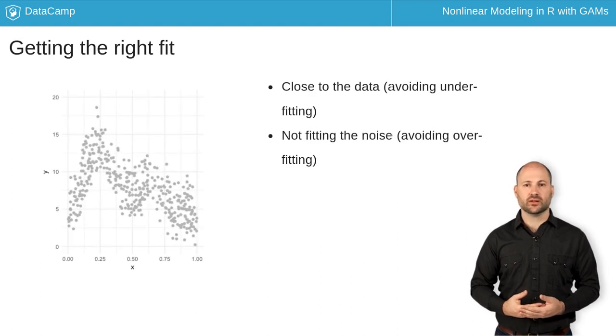In general, we want to balance two things when fitting a nonlinear model. We want a model that captures the relationship by being close to the data, but we also want to avoid fitting our model to noise, or overfitting.